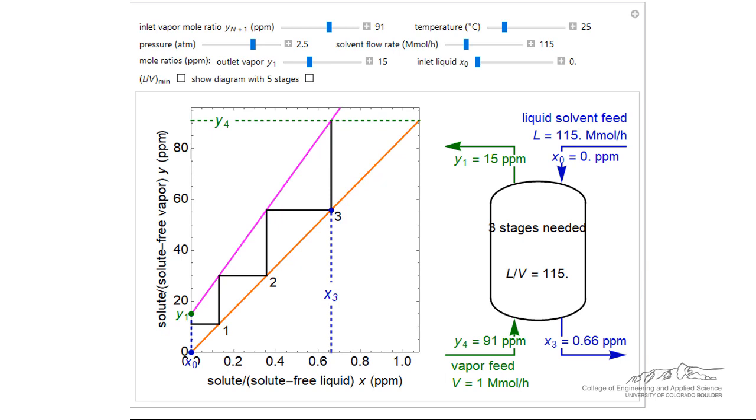The number of theoretical stages required to obtain a desired separation can be evaluated graphically by plotting the operating line and equilibrium line. For dilute solutions, a linear equilibrium line is often sufficient with the slope of the equilibrium line equal to the Henry's Law constant.